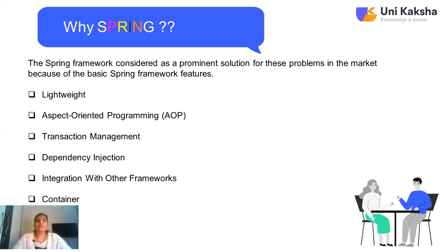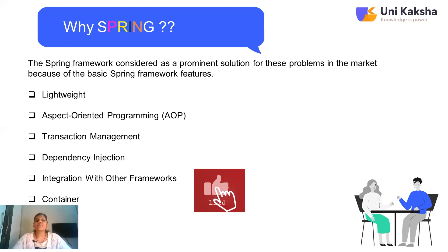The next feature is AOP — Aspect Oriented Programming — which is a very important factor of any framework. It allows developers to develop applications in such a way that business logic can be separated from system services. As the name indicates, it uses aspects in programming. Here we break the entire code into a number of modules, where an aspect is the key unit of modularity. Examples include logging, declarative transactions, security, and so on. You can also think of AOP as similar to triggers.